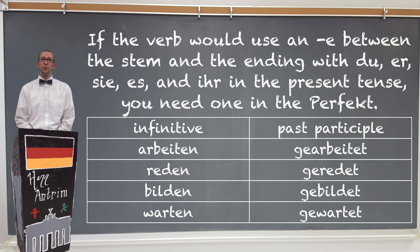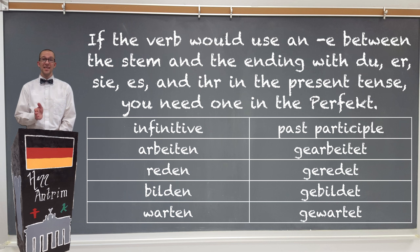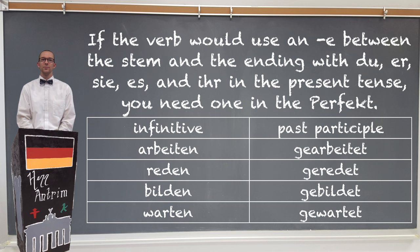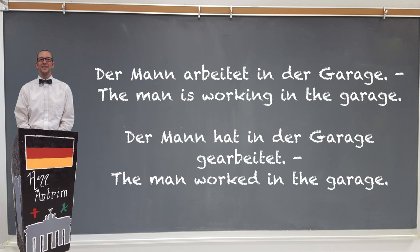There are also a few other rules with regular verbs you need to be aware of. If you would normally add an E in between the stem of the verb and the ending in the present tense for the Du, Er/Sie/Es, and Ihr forms — for instance the verb arbeiten — you would also add an E in between the stem and the ending for the past participle. Der Mann arbeitet in der Garage — The man is working in the garage. Der Mann hat in der Garage gearbeitet — The man worked in the garage.